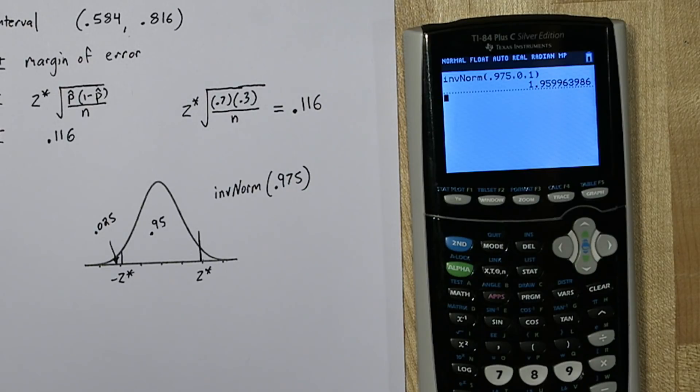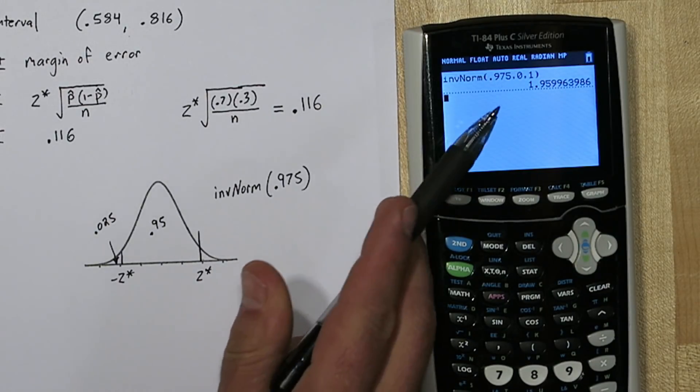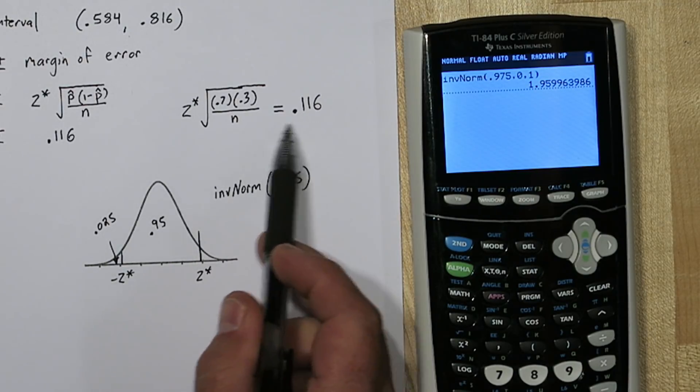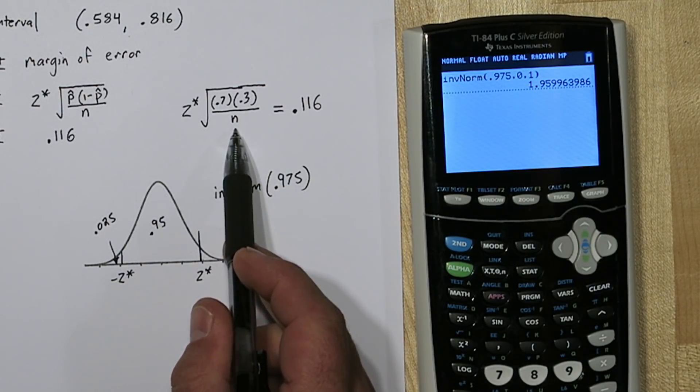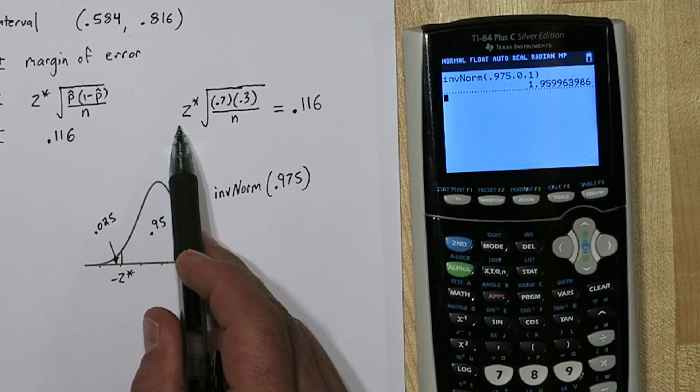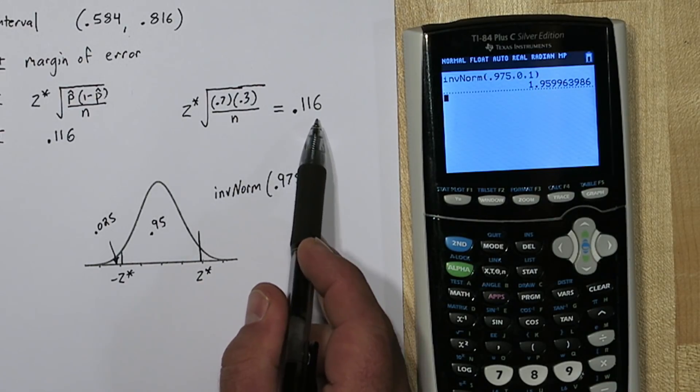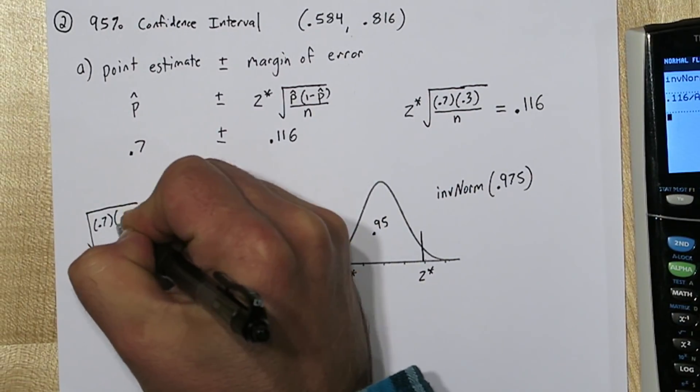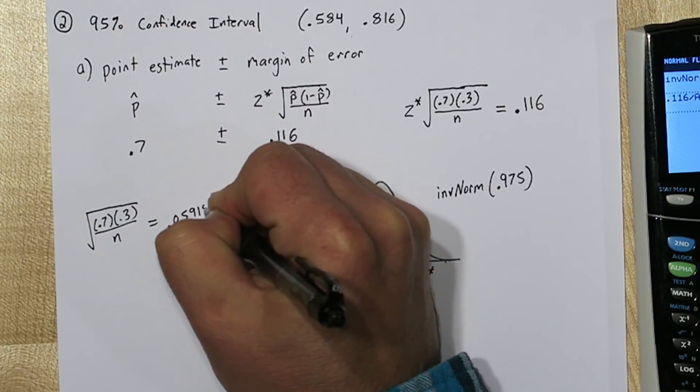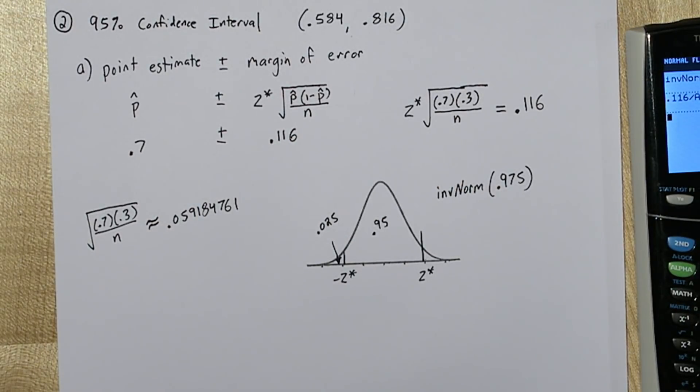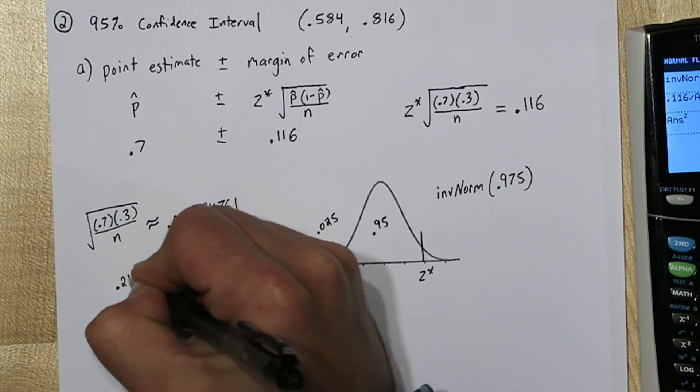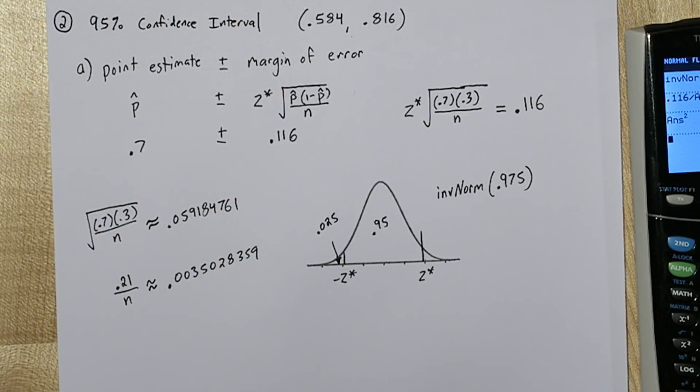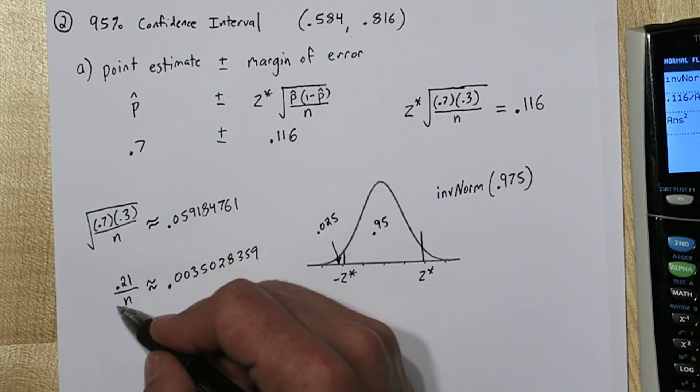All right, so let's go back to the margin of error. We just found that z-star is 1.9599. So algebraically, when we solve this equation for n, the first thing we'd want to do is get rid of that z-star. So let's divide 0.116 by the z-star we just found. Our next step would be to square both sides here. And while we're at it, let's multiply the numerator.